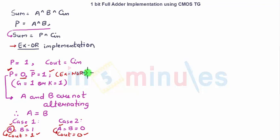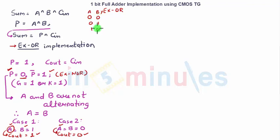Let's first quickly achieve XOR and XNOR. Starting with XOR: inputs are A and B, output is Y. The truth table gives: 0,0 → 0; 0,1 → 1; 1,0 → 1; 1,1 → 0. So this is the XOR truth table.